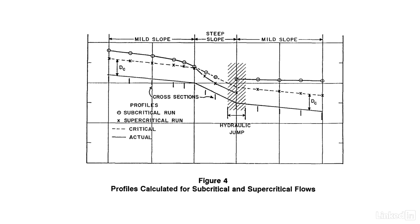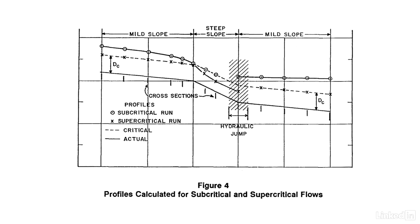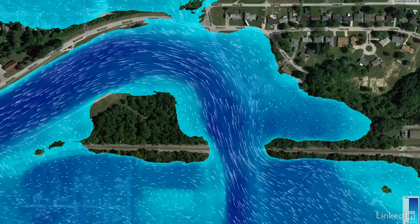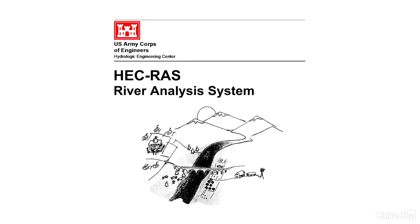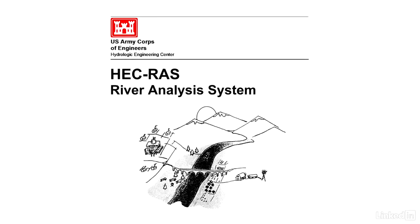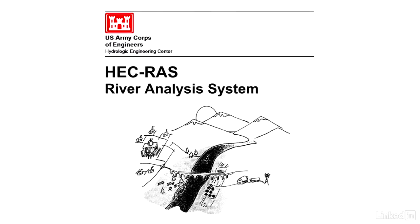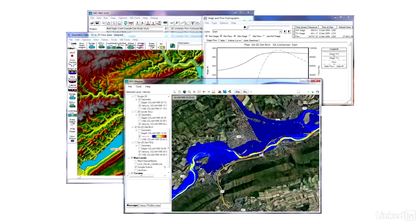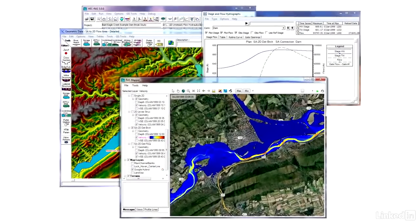There are a bunch of software packages available that can perform hydraulic computations along rivers, but one specific model is ubiquitous in the water resources engineering industry, at least in the US — the River Analysis System, or RAS for the cool kids. The reason for its popularity is simple: it's free. RAS is developed by the US Army Corps of Engineers and has grown from a rudimentary command-line-based program to a sophisticated software package capable of performing extremely complicated simulations.